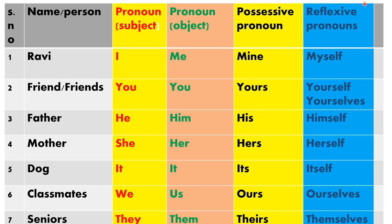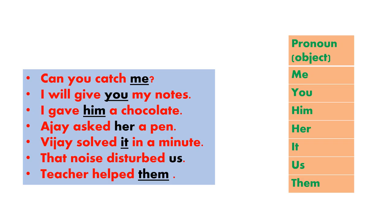Now you can learn them in detail. Read these sentences: Can you catch me? I will give you my notes. I gave him a chocolate. Ajay asked her a pen, which I solved it in a minute. That noise disturbed us. Teacher helped them. Some of these words are used in place of a noun — they are pronouns in the object place, so they are objective pronouns: me, you, him, her, it, us, and them.